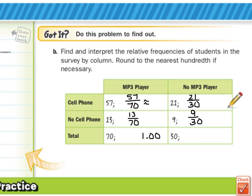As we get these into decimals, 57 out of 70 is about 0.81 or 81 hundredths. 13 out of 70 is 19 hundredths. Notice how 81 hundredths plus 19 hundredths is the 1. 21 out of 30 is about 70 hundredths and 9 out of 30 is about 30 hundredths which adds up to our once again 1.